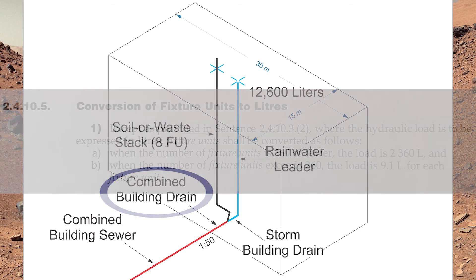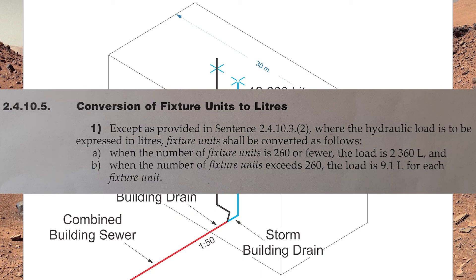We need to look into the code at clause 2410.5: conversion of fixture units into liters. Except as provided in sentence 2410.2, where the hydraulic load is to be expressed in liters, fixture units shall be converted as follows: (a) when the number of fixture units is 260 or fewer, the load is 2,360 liters; and (b) when the number of fixture units exceeds 260, the load is 9.1 liters for each fixture unit.